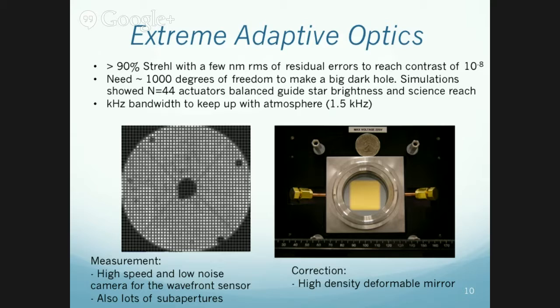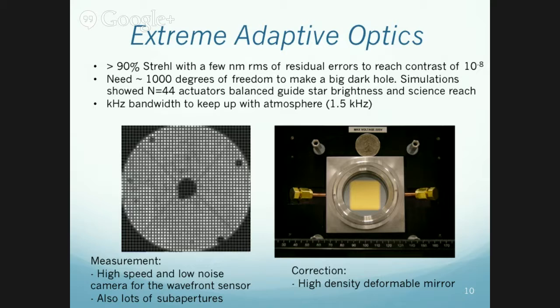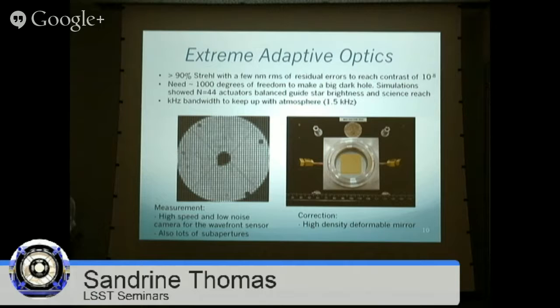The deformable mirror is a MEMS device — it's about seven years old and is air-circulated because it's very sensitive to humidity, so it's sealed. The wavefront sensor detector is a CCID-66, a Lincoln Laboratory device. At 1.2 kHz, it has a few electrons of readout noise, which is one of the key requirements. There's also a newer E2V CCID with essentially zero electrons of read noise — if GPI had been designed later, that's something we could have used.